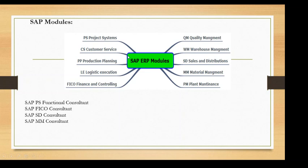SAP has different modules and there may be one functional consultant per module. For example, SAP PS (Project System) has a PS functional consultant. SAP FICO consultant is another example, where FICO covers finance and controlling — two modules combined.